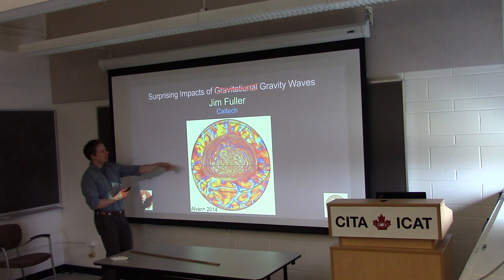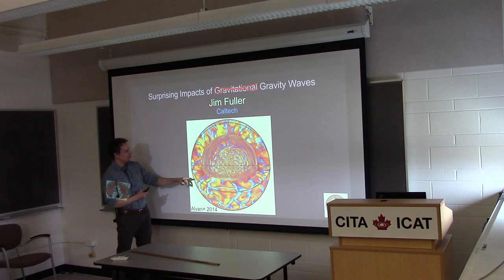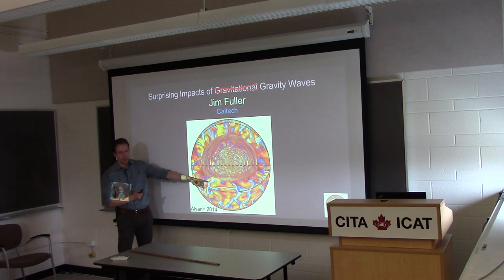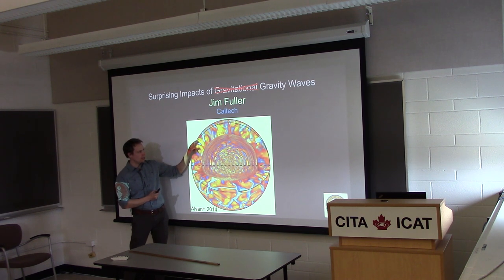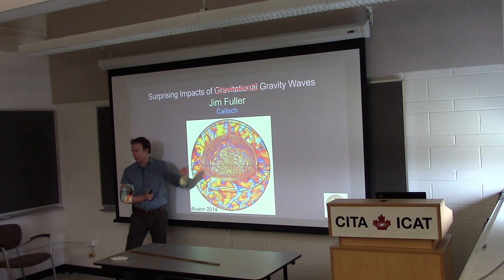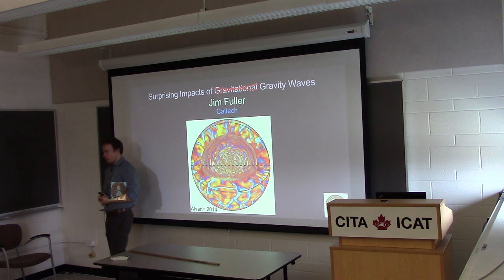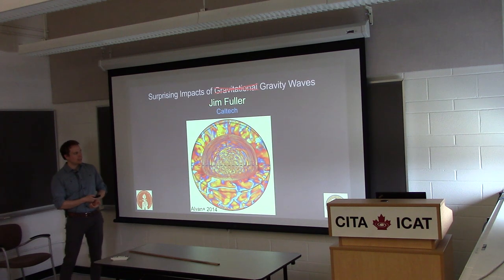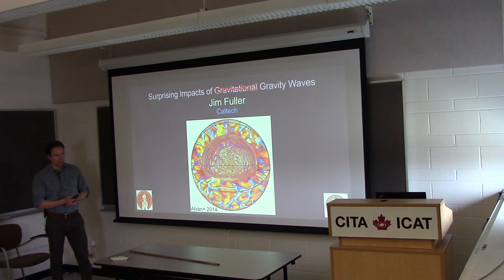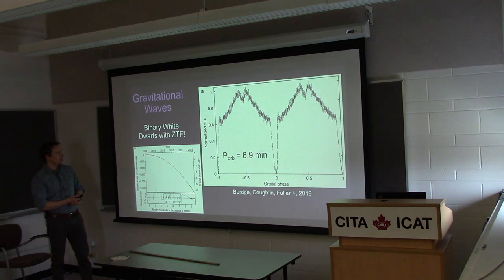This is a really nice simulation of the sun by Lucy Alphan. You see the outer convection zone here. The inside of the sun is stably stratified, but the convection on the outside of the sun excites gravity waves that propagate into the core. This is one of many examples in astrophysics where gravity waves can potentially be very important in different contexts.